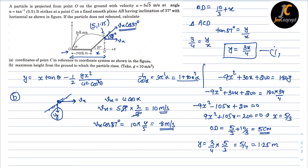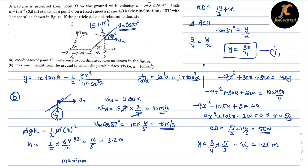The component vx·cos37° = 10·(4/5) = 8 m/s is the velocity that causes the particle to rise further. Using energy conservation: mgh = (1/2)mv², so h = v²/(2g) = 64/20 = 3.2 meters. This is not the total height, so the maximum height from the ground = 1.25 + 3.2 = 4.45 meters. This is the solution for part two.